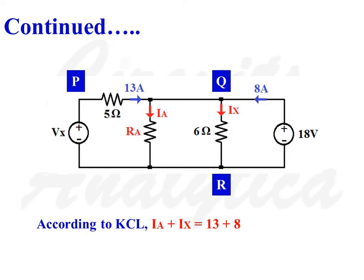Applying KCL at node Q we will get IA plus IX is equal to 13 plus 8, equating the incoming and outgoing currents. IA plus IX is equal to 21.